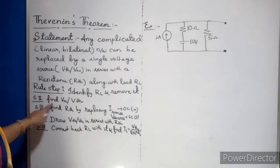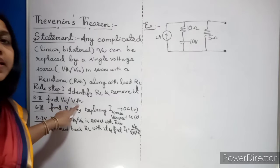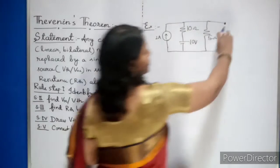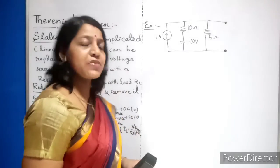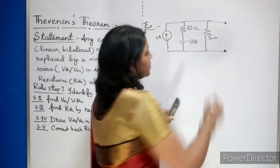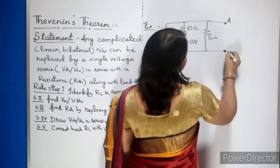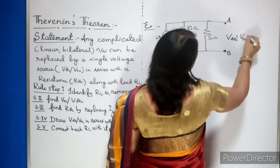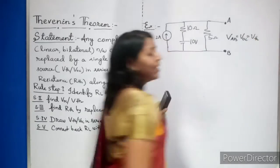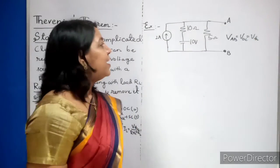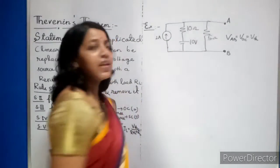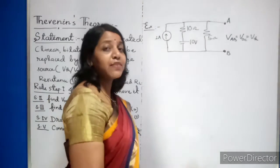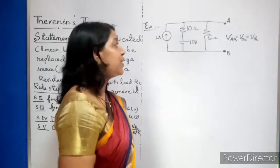Step 2: Find VOC, also called VTH — the open circuit voltage or Thevenin's voltage. Let the open terminals be A and B. I want to find VAB, which is VOC. You can apply KCL or KVL — choice is yours. I am most comfortable with KCL because it is a shortcut method.